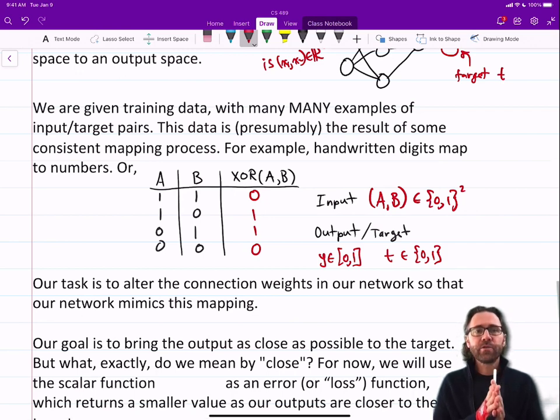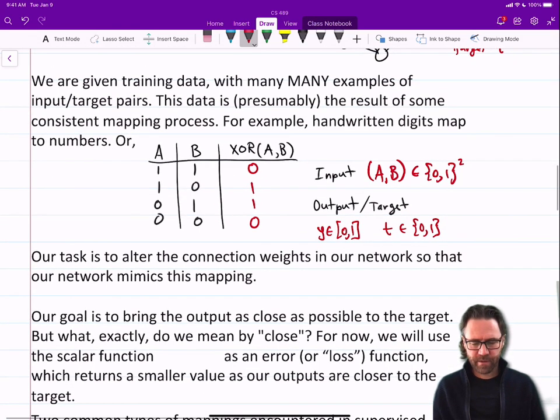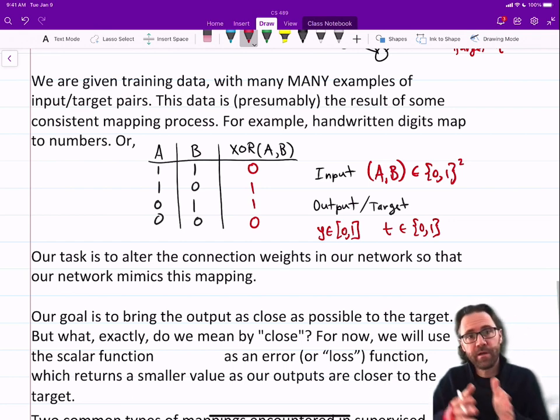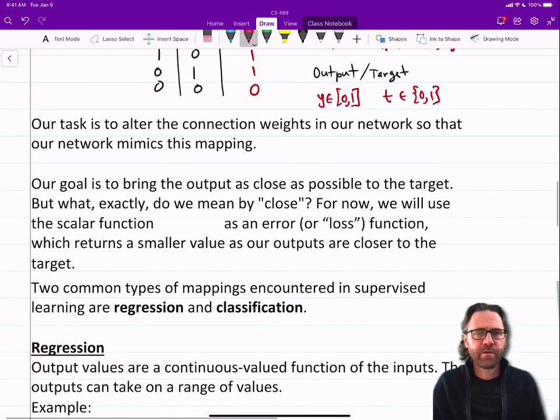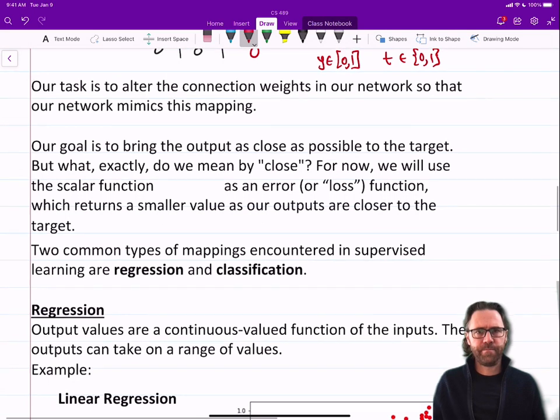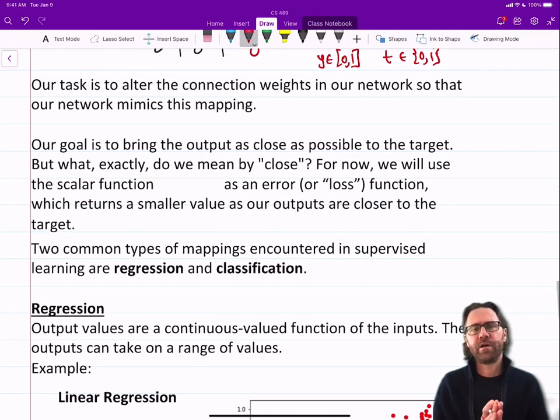So our task is to alter the connection weights in our network so that our network mimics this mapping. Given the input 0, 1, for example, we want it to output a 1. So our goal is to bring the output of our neural network as close as possible to the target.